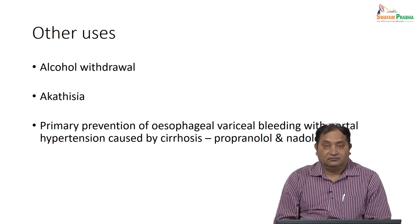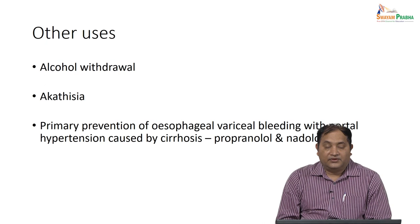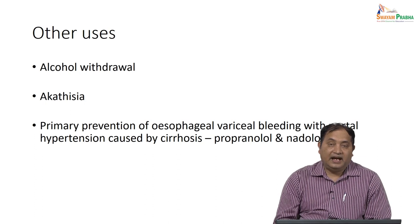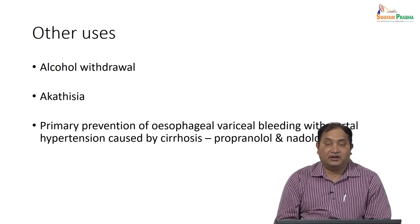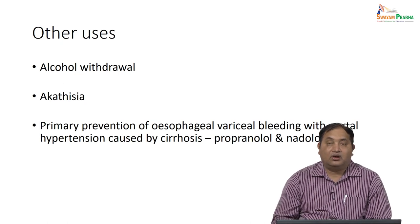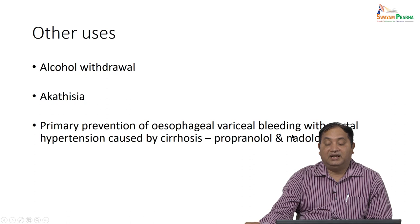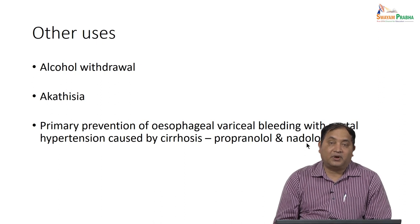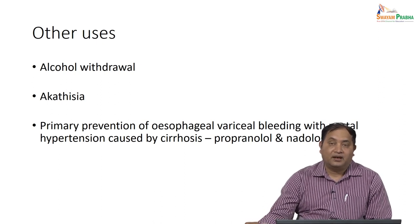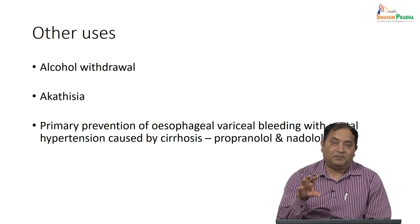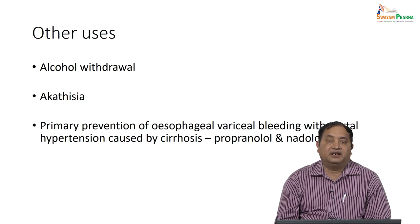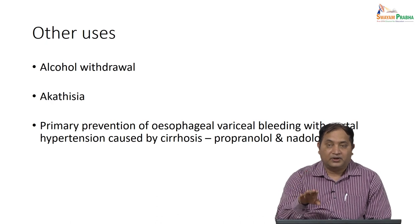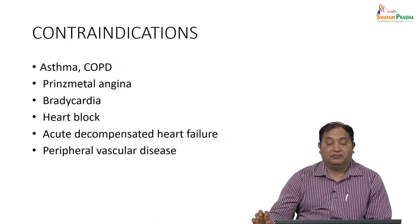Other uses include alcohol withdrawal — where patients experience palpitation and tremor — as well as catatonia and primary prevention of esophageal bleeding in portal hypertension. Propranolol and nadolol are used in portal hypertension, where propranolol reduces portal hypertension and thereby decreases chances of bleeding. Normal portal pressure is 40–80, and propranolol helps reduce it.